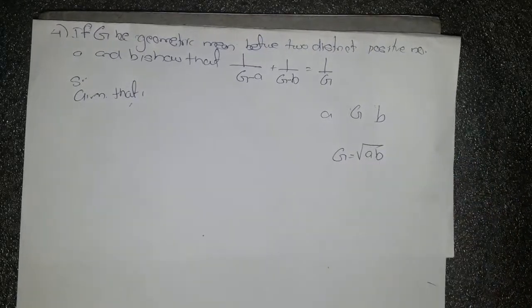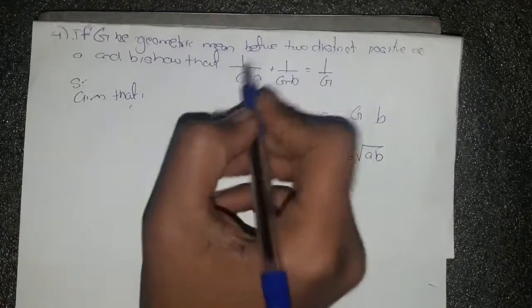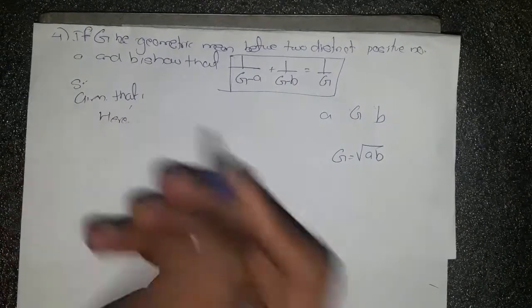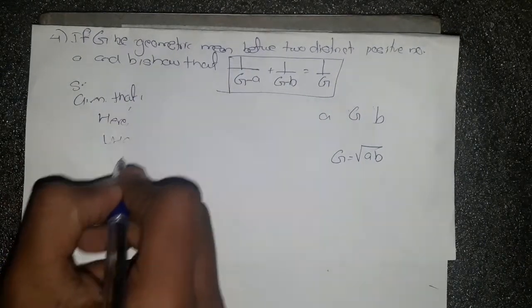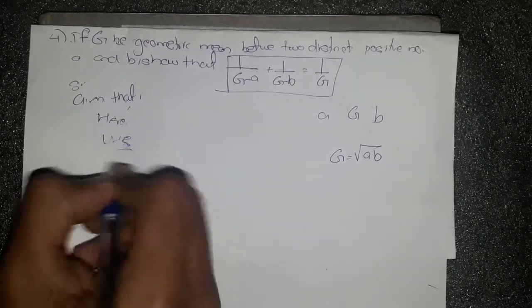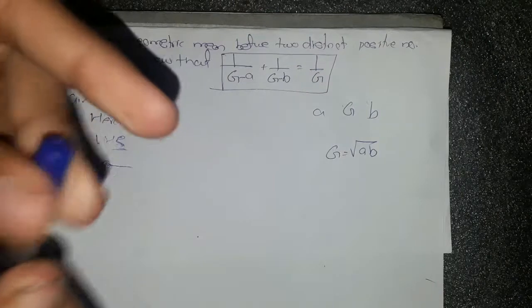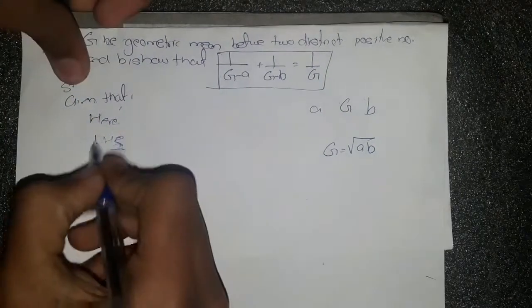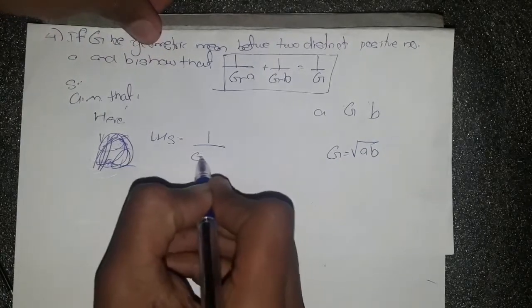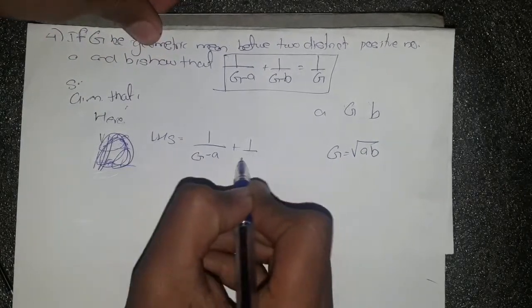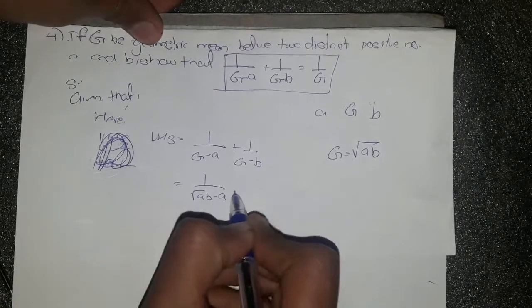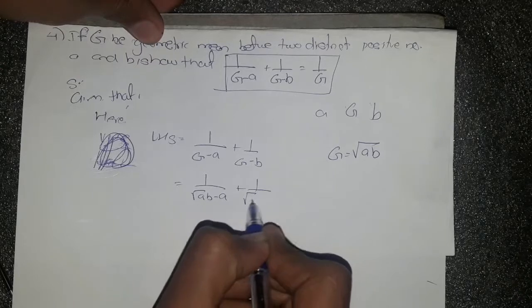So here we go, we take LHS. We have LHS equals to 1 by G minus A plus 1 by G minus B, which equals 1 by root under AB minus A plus 1 by root under AB minus B.